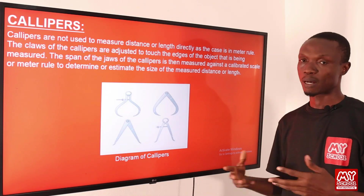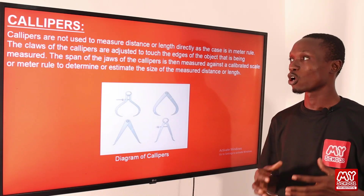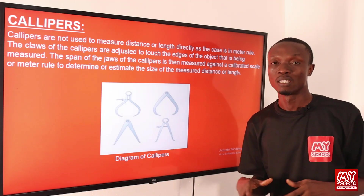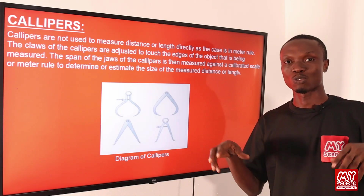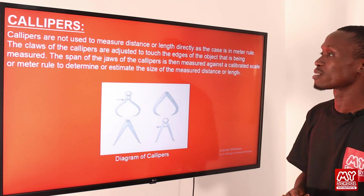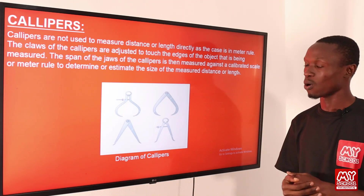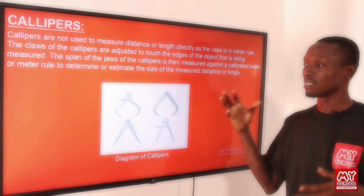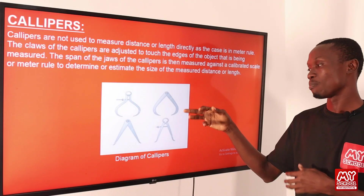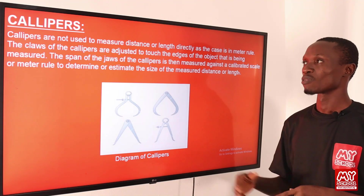We are going to be discussing about calipers. Calipers cannot be used directly, just like the meter rule, in measuring distance. Instead, the claws of the calipers are adjusted to touch the edge of the object being measured. For example, if we want to measure the edge of a cylinder, we extend the claws of the caliper to touch the edge. The span of the jaws is then measured against a calibrated scale or meter rule to determine the size. On screen are the two types of caliper: the outside caliper and the inside caliper, which is used to measure the inside diameter of a cylinder.